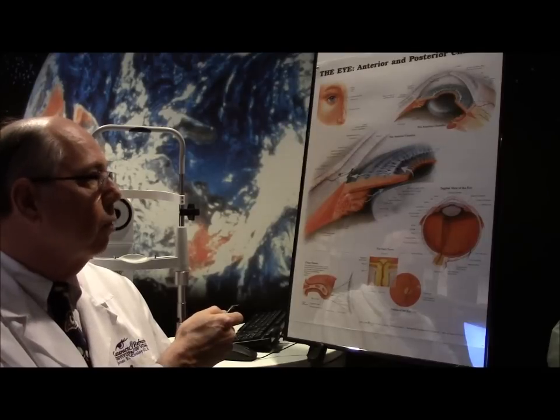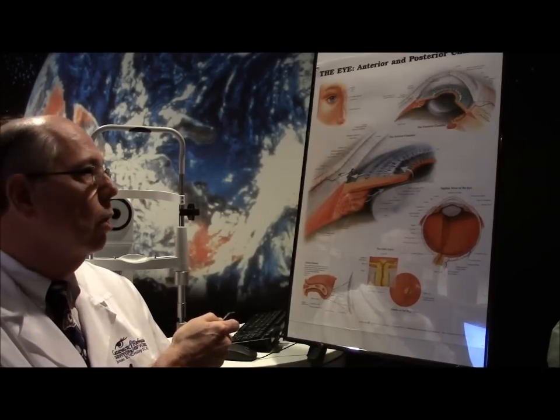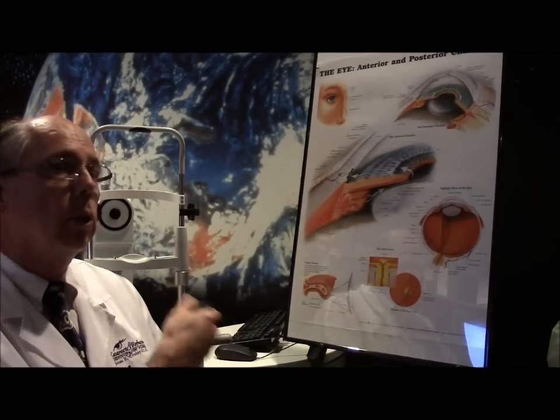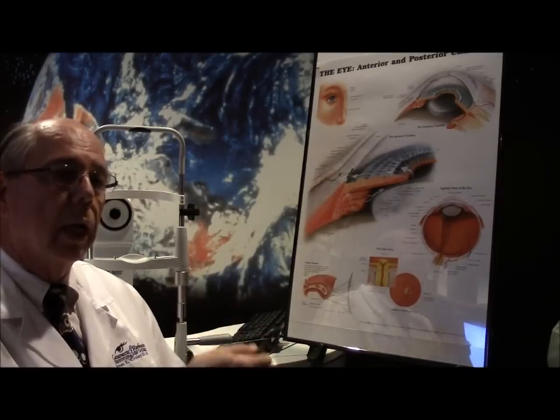In narrow angle glaucoma, it's all about structure and shape of your eye. So someone who has a small eye, which is someone who's far-sighted, has a small eye. Someone who's near-sighted has a large eye.